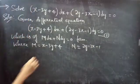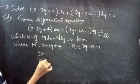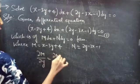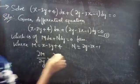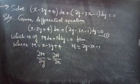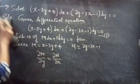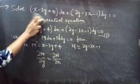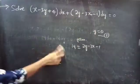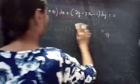If the partial derivative of M with respect to y is equal to the partial derivative of N with respect to x, then we can say that the given differential equation is an exact equation. So let's find the partial derivative of M with respect to y and the partial derivative of N with respect to x.